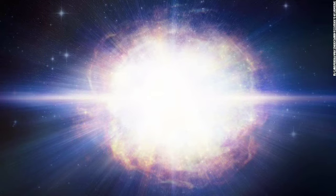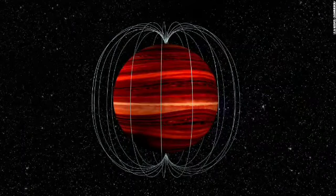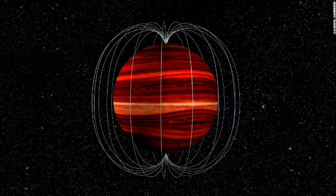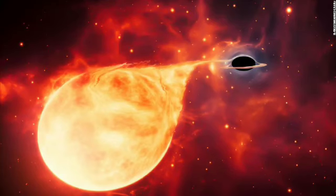This is a brown dwarf, or a failed star object, and its magnetic field. The brown dwarf's atmosphere and magnetic field rotate at different speeds, which allowed astronomers to determine wind speed on the object.